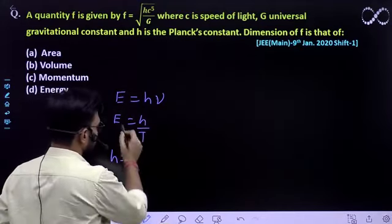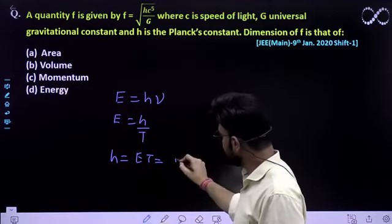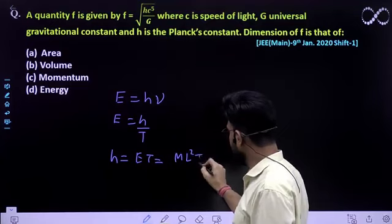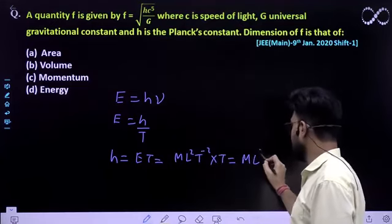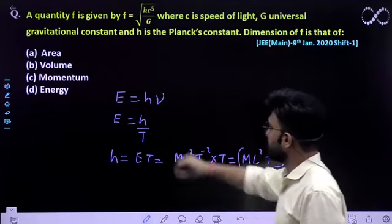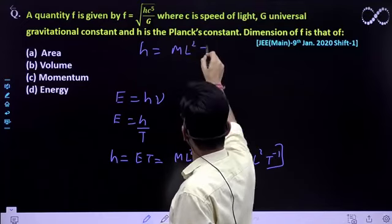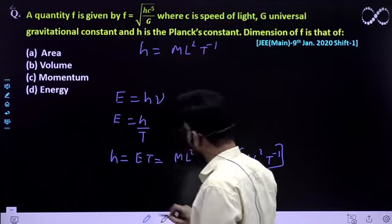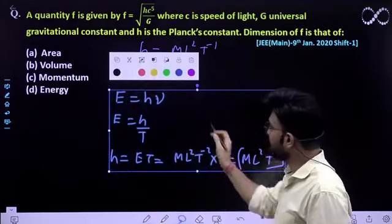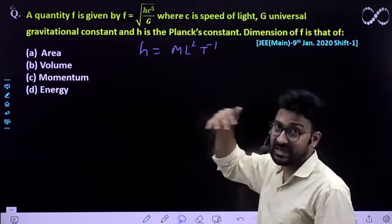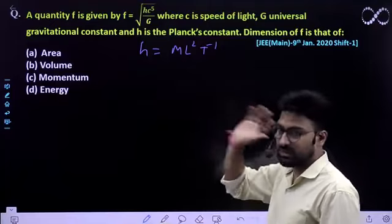To h ki value kitne hogi? E into T. Iska dimension nikaal lo. Energy ki dimension kitne hoti hai? ML²T⁻² multiplied by time, to what you will be getting? ML²T⁻¹. This is expression for dimension for h. If you want to learn, you can directly memorize h ki value, but if you don't know, the formula should be clear to you.